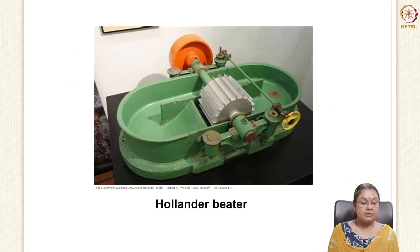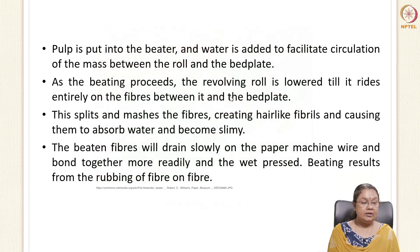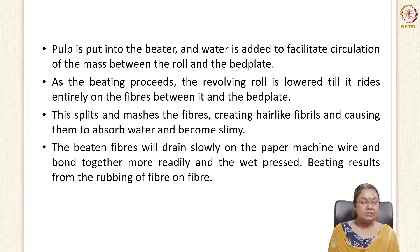Looking at the picture of the Hollander beater, you can see the central division or partition which helps in the movement of the stock. Pulp is put into the beater and water is added to facilitate circulation. The roll plays an important role in circulating the mass, and as beating proceeds the revolving roll is lowered and rides on the fiber — placed between the roll and the bed plate — splitting the fibers into small fibrils.